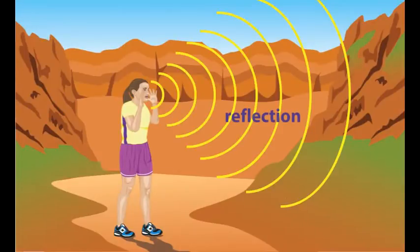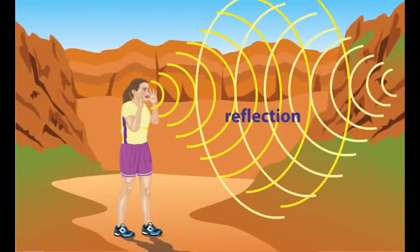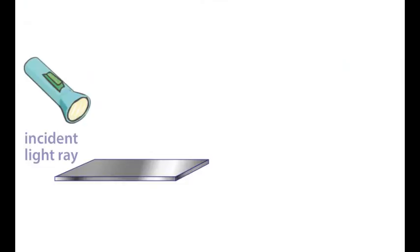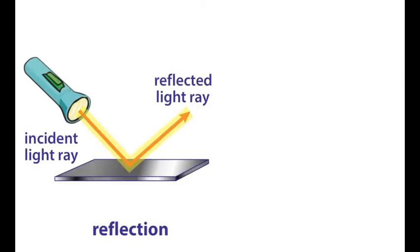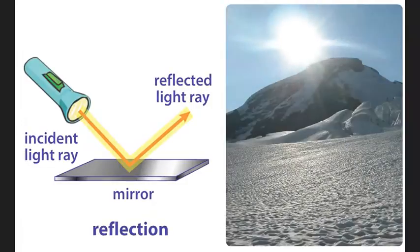When a sound wave is reflected, we hear an echo. Light waves reflect off surfaces like a mirror or snow.